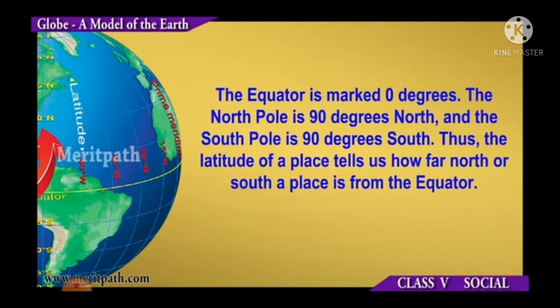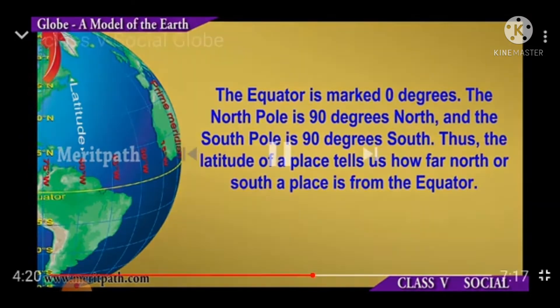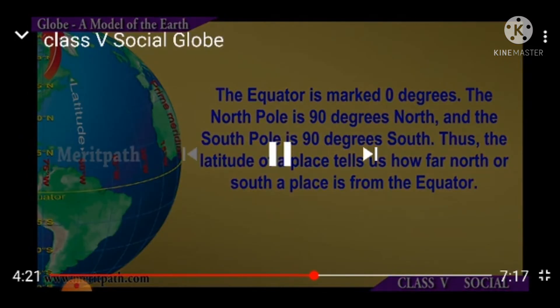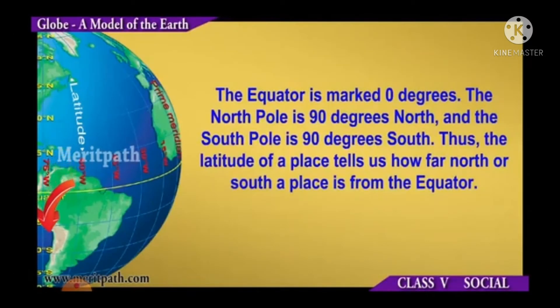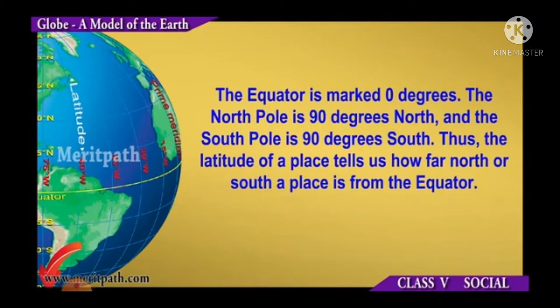The north pole is 90 degrees north and the south pole is 90 degrees south. Thus, the latitude of a place tells us how far north or south a place is from the equator.